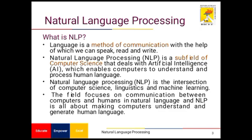First we see what is NLP. Before we discuss NLP, what does mean by language? Language means it is a method of communication between two persons or two human beings with the help of speaking, reading, and writing. NLP — natural language processing — is a sub-field of computer science that deals with artificial intelligence, which enables computers to understand and process human language. NLP is the interaction of computer science, linguistics, and machine learning. The field focuses on communication between the computer and the human in natural language, and NLP is all about making computers understand and generate human language.